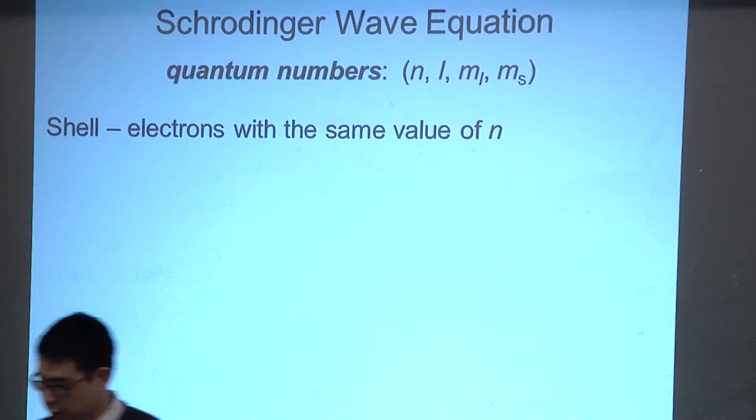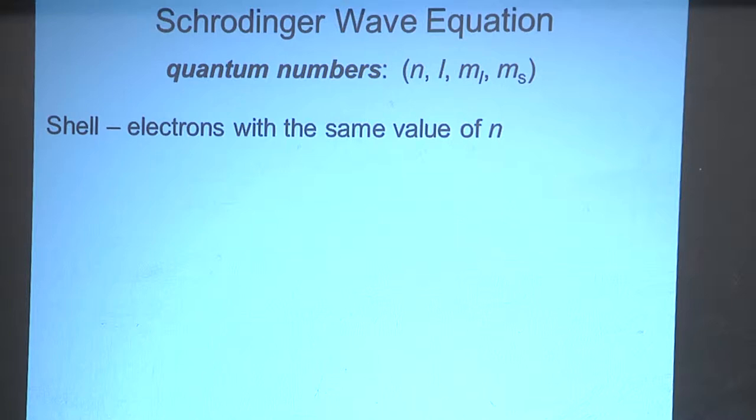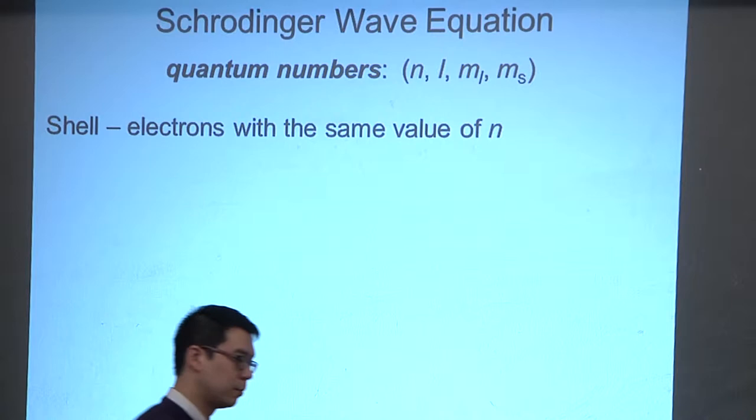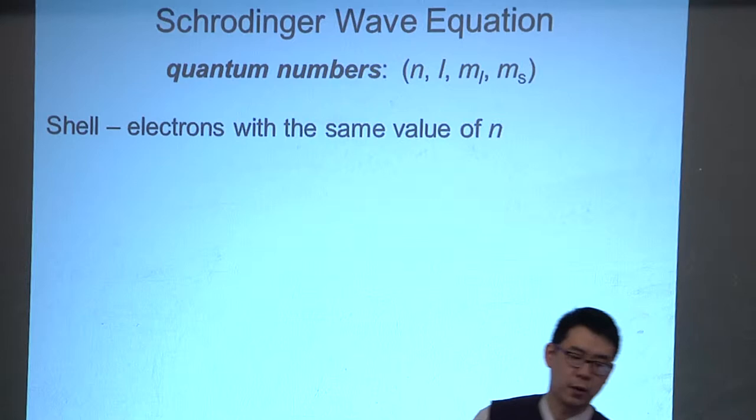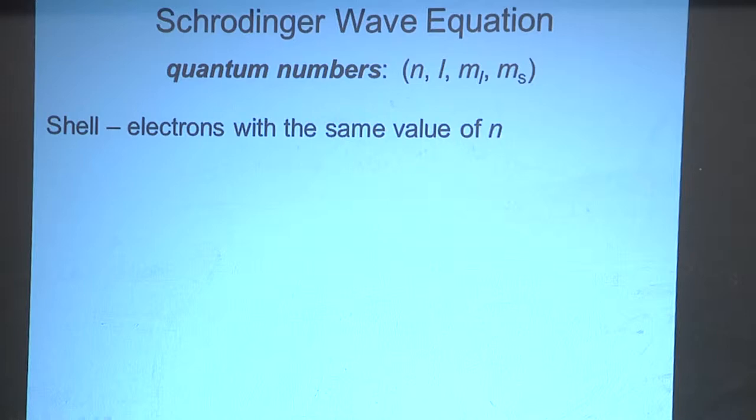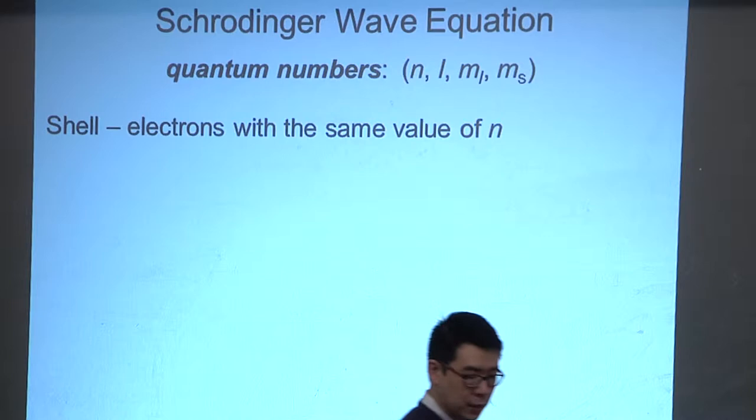Let's put names to these quantum numbers. 'n' can be any whole number starting with one: 1, 2, 3, 4 and so on. This is called the principal quantum number and it defines what we call a shell. n=1 gives us the first shell, n=2 gives us the second shell, and so on.